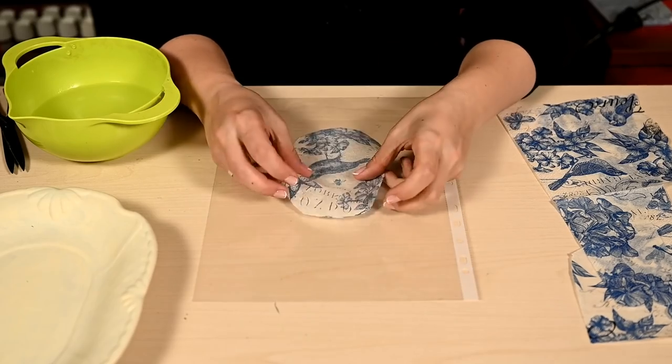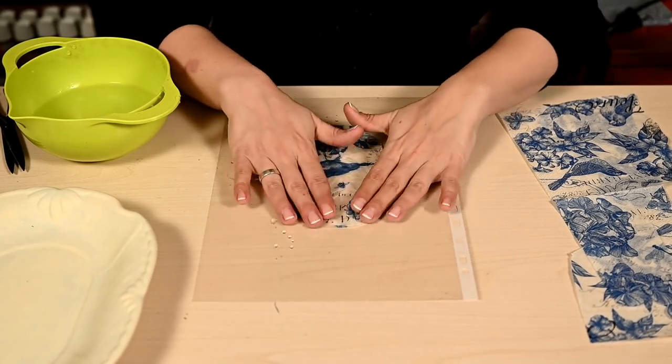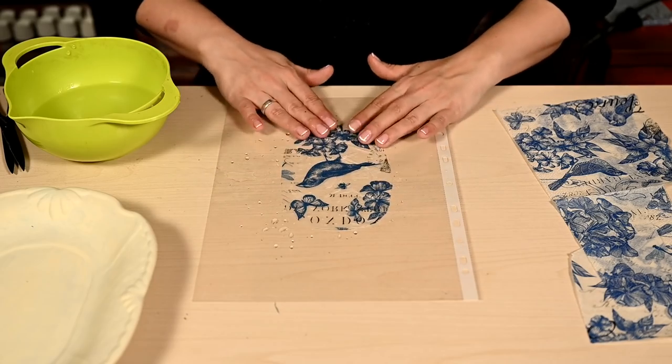I'm separating the top layer of the napkin with the print. I'm placing the napkin face down on a sheet protector, moistening it and gently straightening it right on the sheet protector.